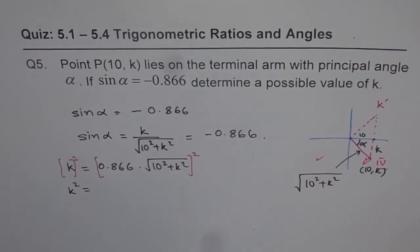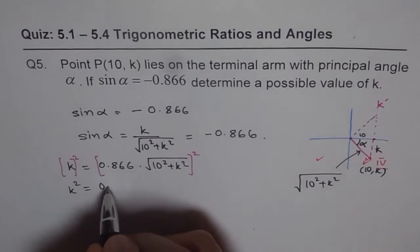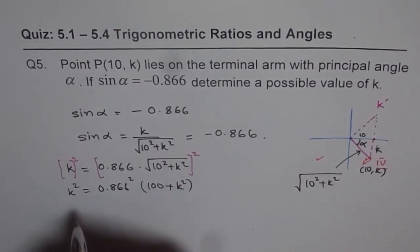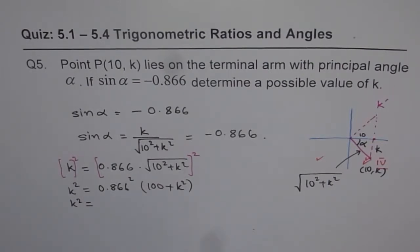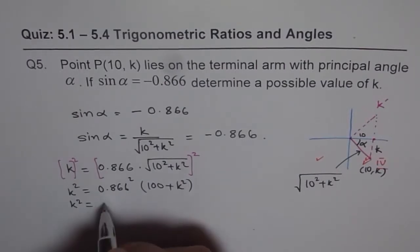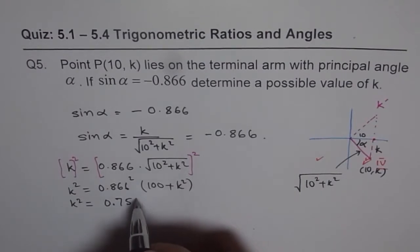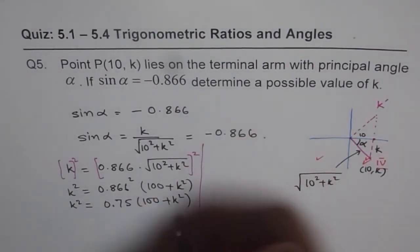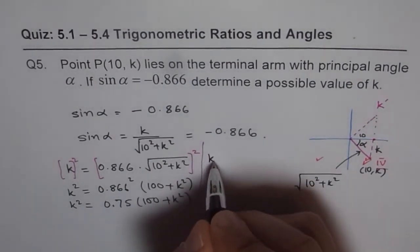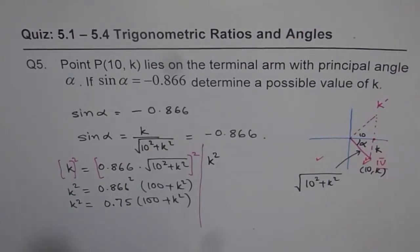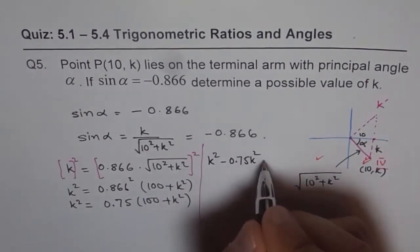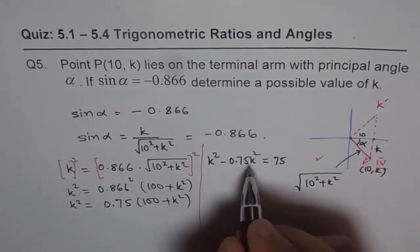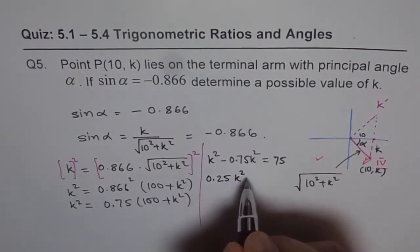So we get k squared equals 0.866 squared times (100 + k squared). Now 0.866 squared is 0.7499, which we can write as 0.75. So k squared equals 0.75 times (100 + k squared). Expanding: k squared equals 75 plus 0.75k squared. Bringing terms together: k squared minus 0.75k squared equals 75, which gives us 0.25k squared equals 75.